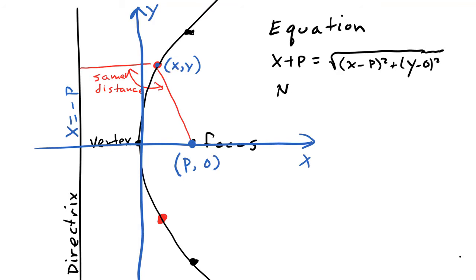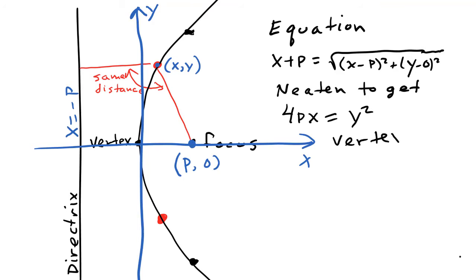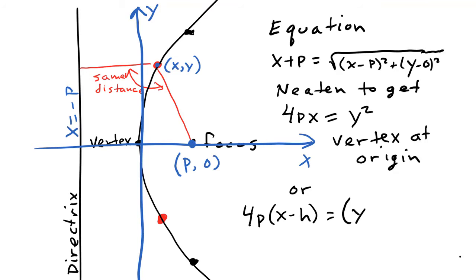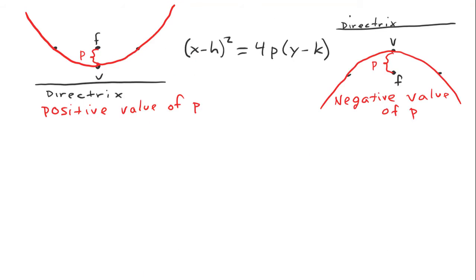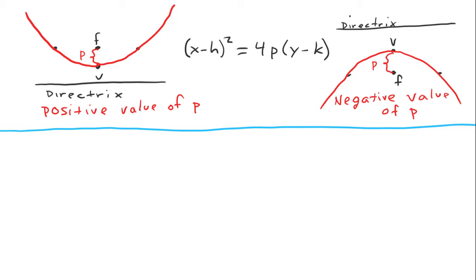We can simplify that using algebra just as we did before to get the equation 4px equals y squared. That is the equation of a parabola with its vertex at the origin. If we want to put the vertex somewhere else, we have 4p times the quantity (x minus h) equals the quantity (y minus k) squared, which puts the vertex at (h, k). Now we come back to the summary page, and we see that for the vertical directrix, the equation is (y minus k) squared equals 4p times the quantity (x minus h).